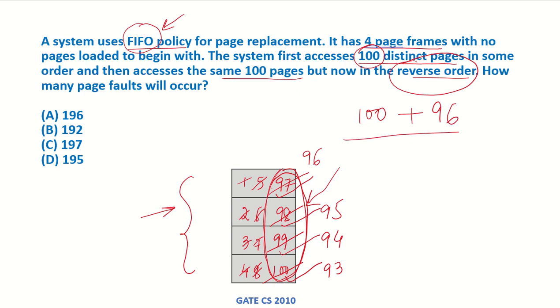So 100 plus 96 — these are going to be the total number of page faults.